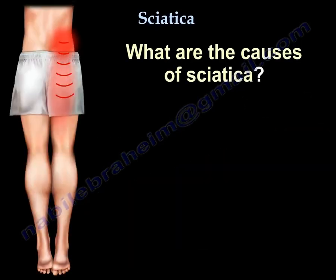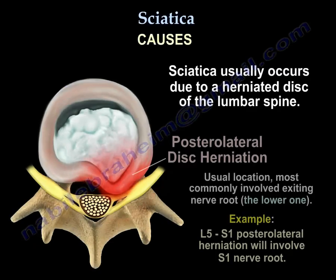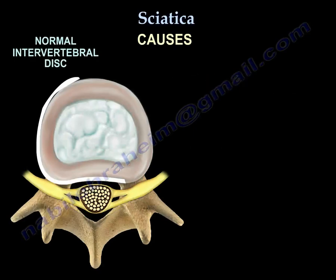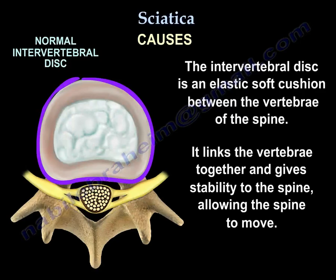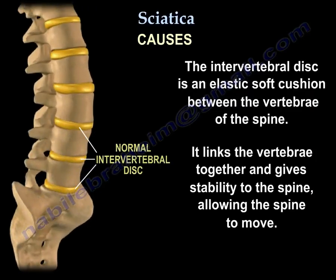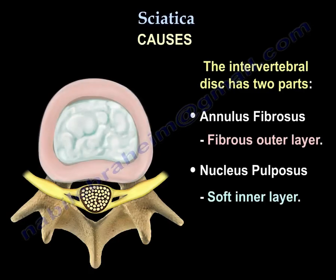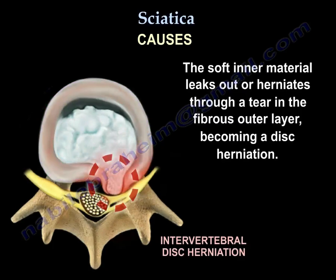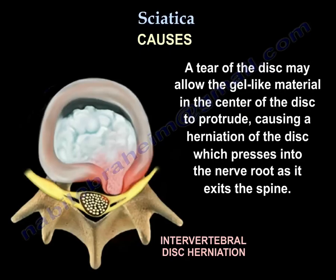The most common cause of sciatica is a herniated disc. The disc is an elastic soft cushion between the vertebrae that links them together, provides stability, and allows movement. It has a fibrous outer layer called the annulus fibrosus and a soft inner layer called the nucleus pulposus. The soft inner material leaks out or herniates through a tear in the fibrous outer layer, producing a disc herniation.